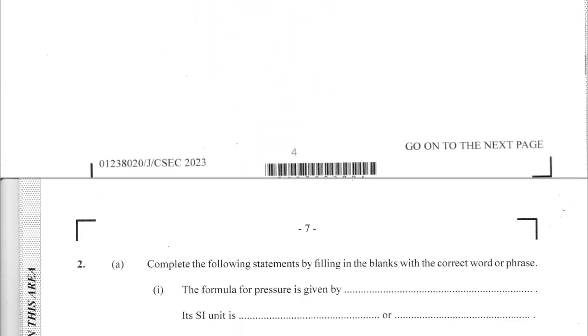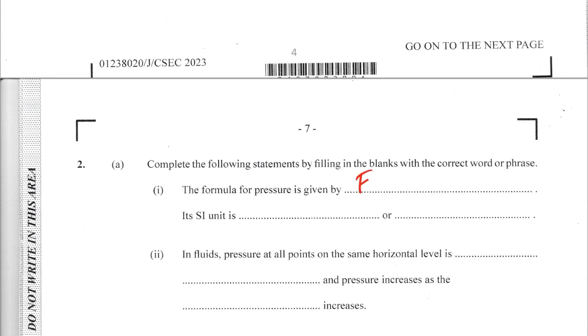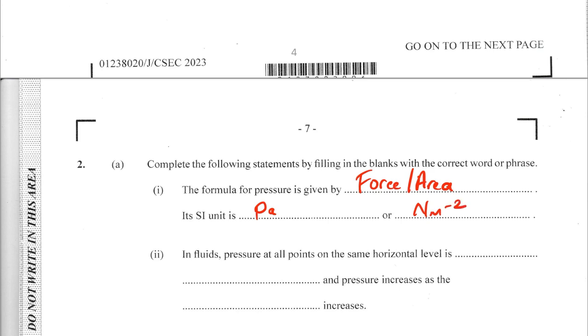Question 2A: complete the following statements by filling in the blanks. AI — the SI unit for pressure is Pascal, or newtons per square meter (N/m²). Pressure is defined as the force applied per unit area, and the SI unit Pascal is equivalent to 1 newton per square meter. This means that if a force of 1 newton is applied to an area of 1 square meter, the resulting pressure is 1 pascal.